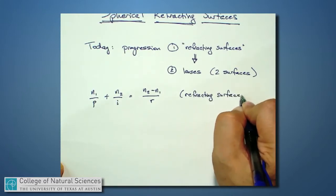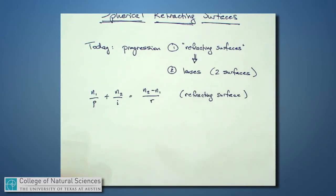The first equation I want us to know is if I have light coming in from an object and it's refracting at a spherical surface and then creates an image someplace, there is a relationship between the object distance p, the image distance i,